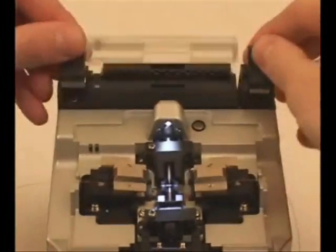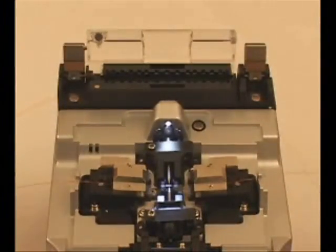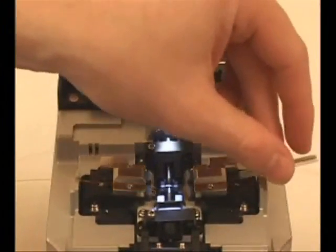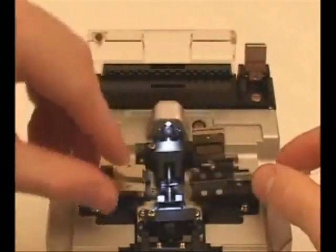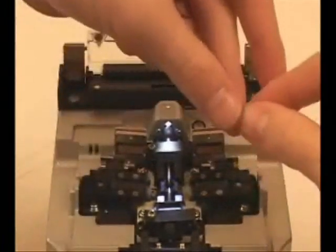Now, open the splicing cover and slide up the protection sleeve into position. Open the fiber holders, then remove the fusion splice.